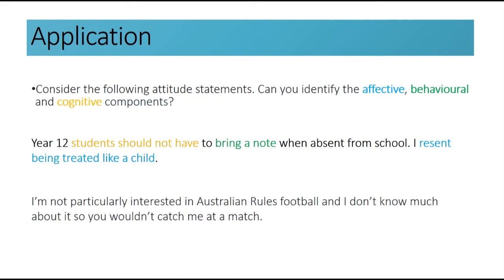Let's try another one: 'I'm not particularly interested in Australian rules football and I don't know much about it, so you wouldn't catch me at a match.' The affective component is the lack of care or interest in Australian football. The behavioural component would be not going to a football match, and the cognitive component is the lack of knowledge of the game or the belief that it isn't an interesting game to watch. Can you see how they work together to shape our attitudes?